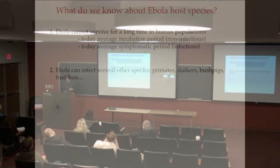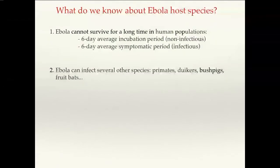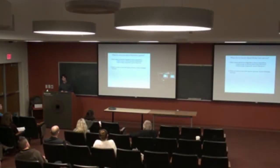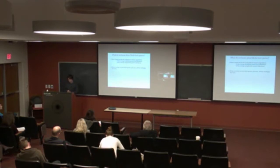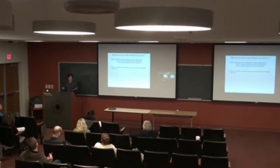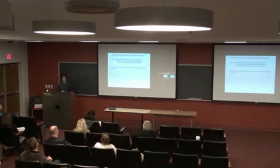Ebola can infect several other species — that includes primates of course, since we are great apes. But the virus can also infect species unrelated or remotely related to us, like duikers — small antelopes living in the forest in Central Africa. Pigs and bush pigs also get infected once in a while. Fruit bats, as mentioned earlier today, are well-known hosts. There are probably other species that either die as dead-end hosts or can keep the virus longer and contribute to spreading it over time.